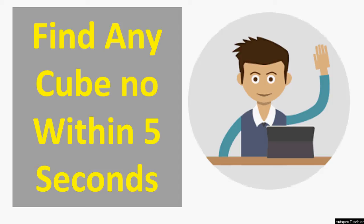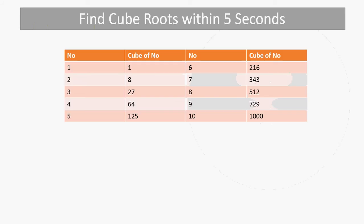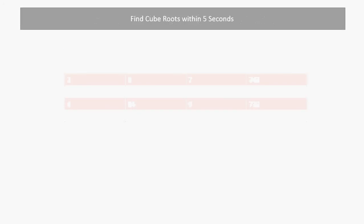Hello friends, find any cube numbers within 5 seconds — the simple cube numbers from 1 to 10. 1 for 1, 2 for 8, 3 for 27, 4 for 64, 5 for 125, 6 for 216, 7 for 343, 8 for 512, 9 for 729, and 10 for 1000. Let's see one example.